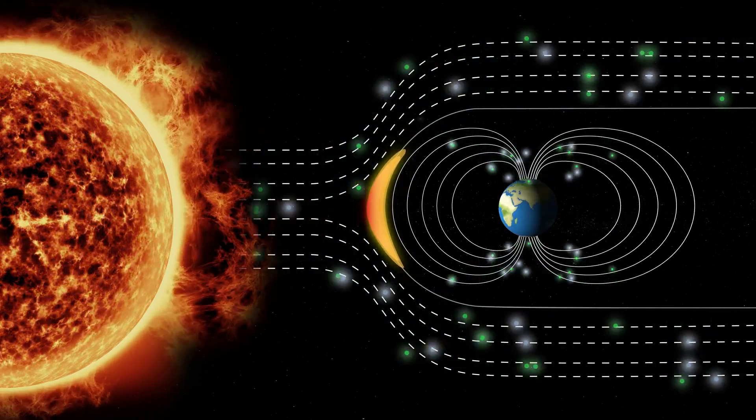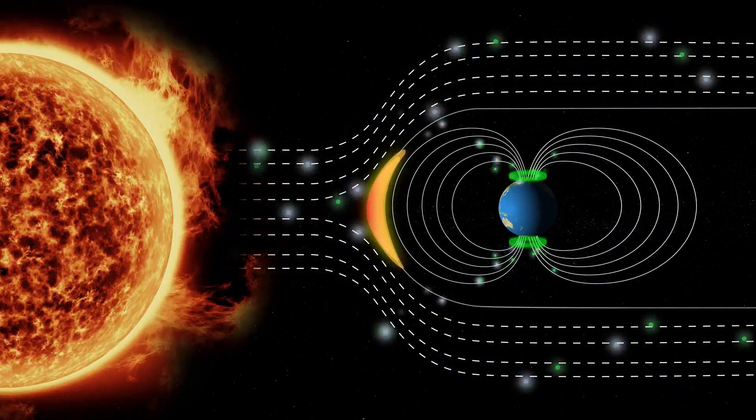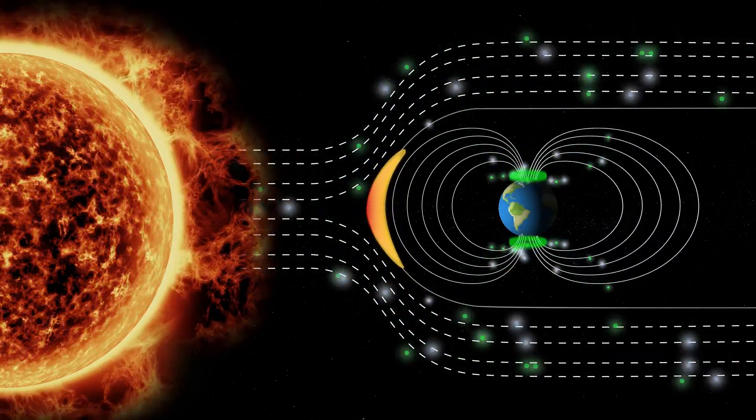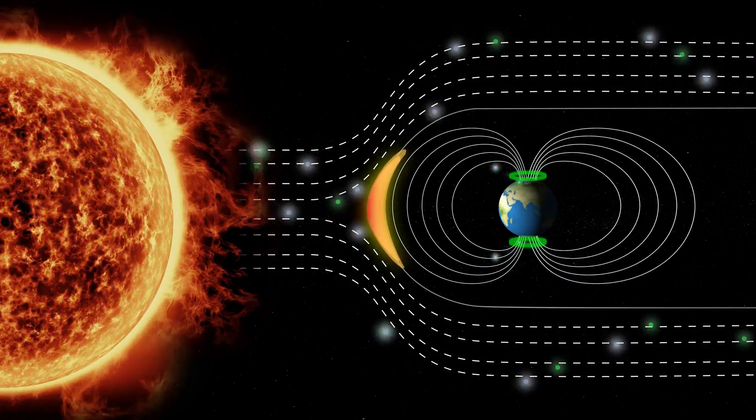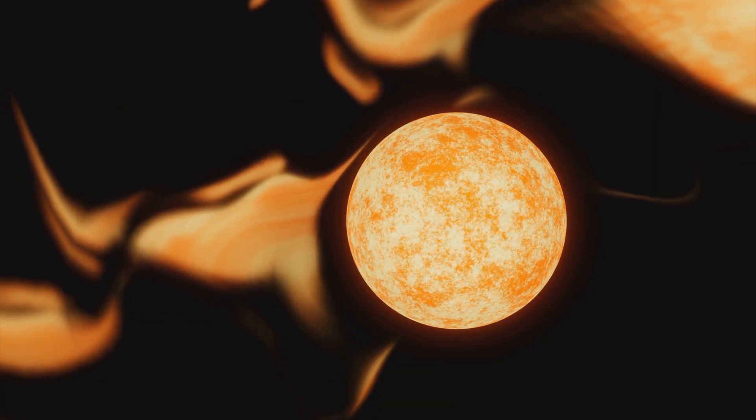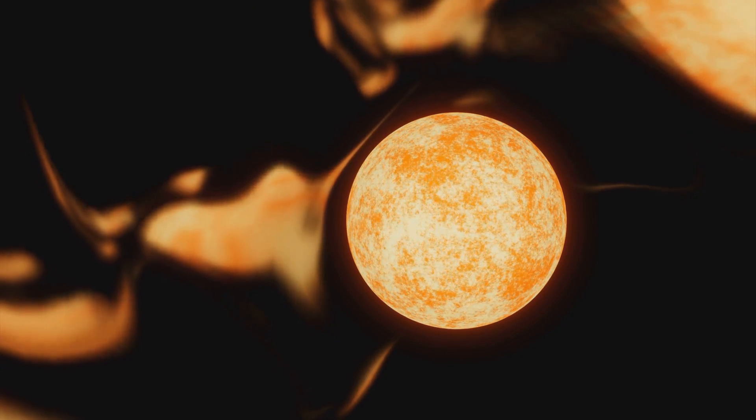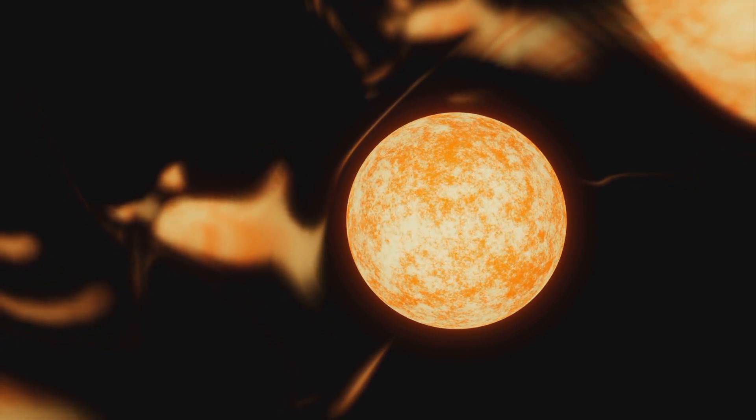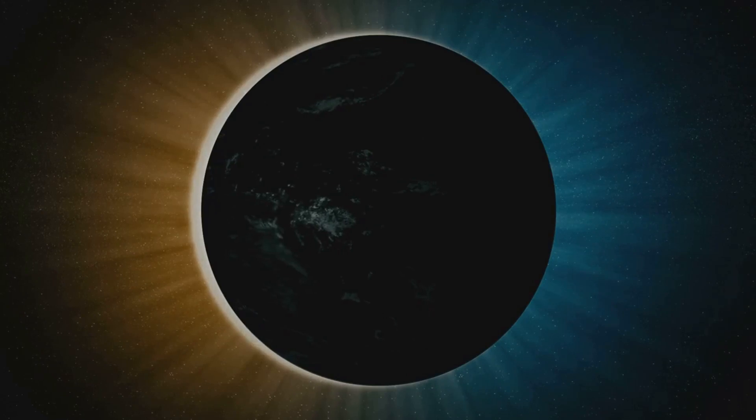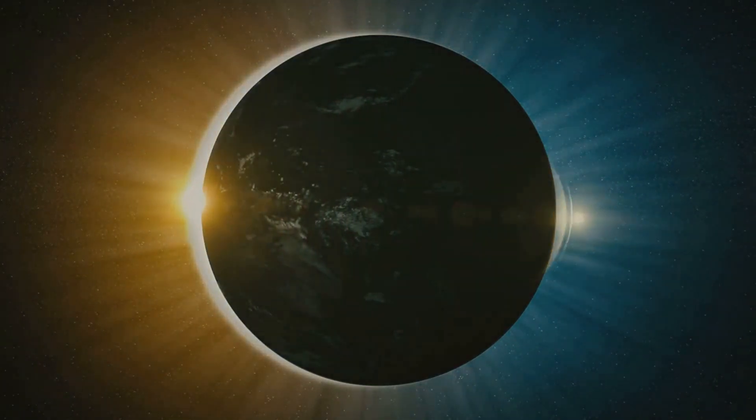What's intriguing is the visual aspect of these coronal holes. They appear as dark spots on the Sun's fiery surface. You might wonder why. Well, it's because these holes are cooler and less dense than the surrounding plasma. This contrast makes them stand out, creating the illusion of a dark void.